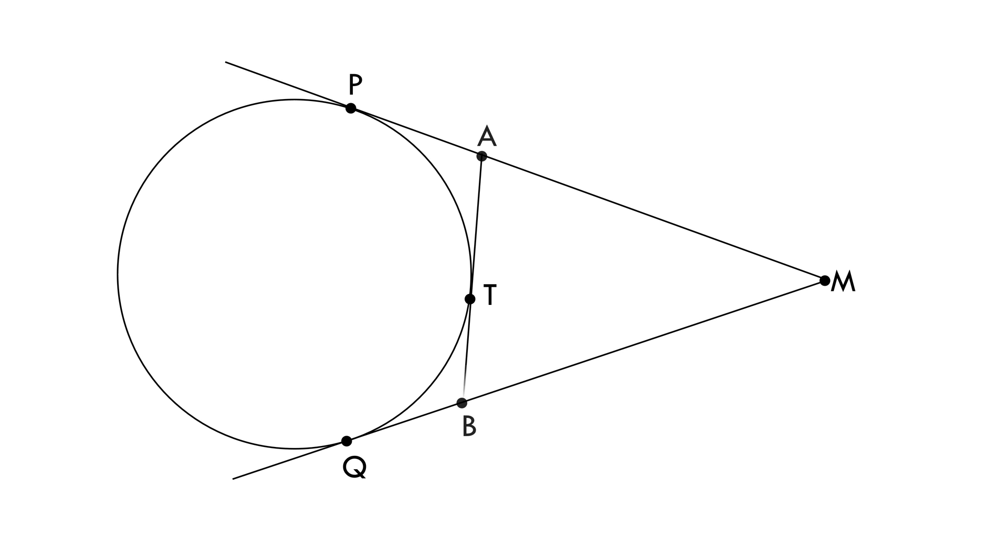AB is also a tangent drawn at point T, meeting PM at A and QM at B. The question is, if PM equals QM equals 10 units, what is the perimeter of the triangle AMB?